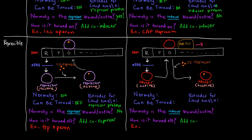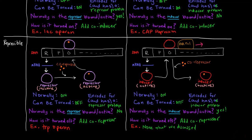What about a repressible system that is positively controlled? Being repressible means it can be turned off and is normally on. Being positively controlled means it encodes for and has an inducer protein. Since it's normally on, the inducer is normally active and bound to the operator, allowing RNA polymerase to allow transcription. To turn it off, you add a co-repressor that binds the inducer and makes it inactive. We didn't actually discuss a specific example for this combination.